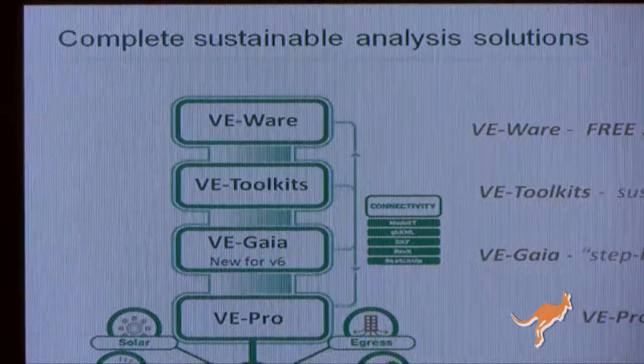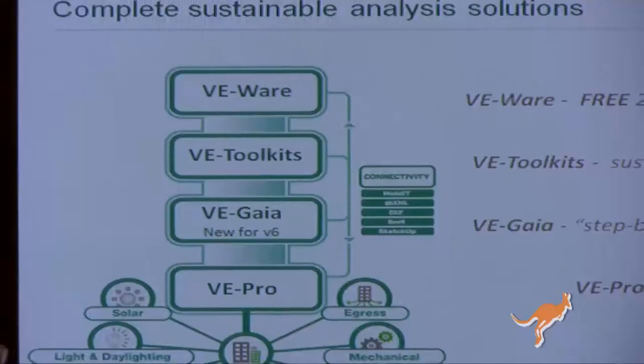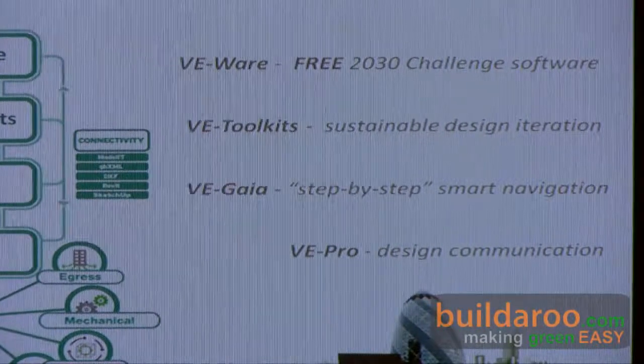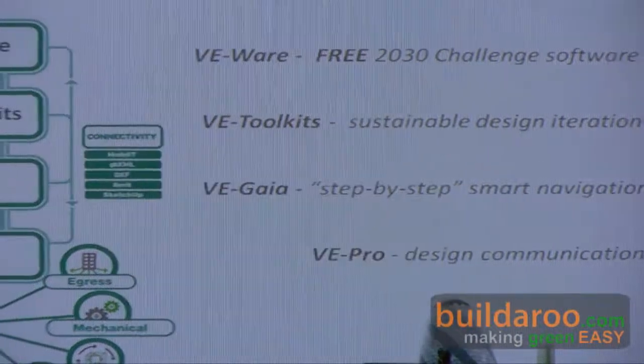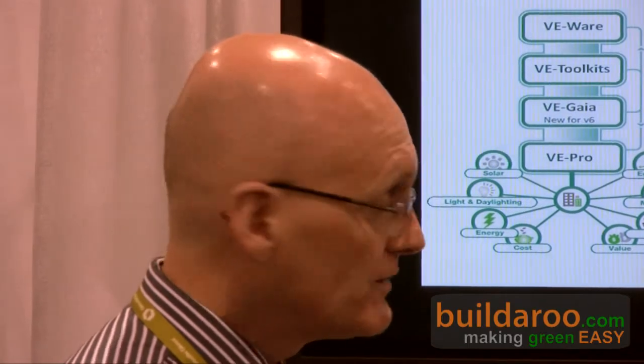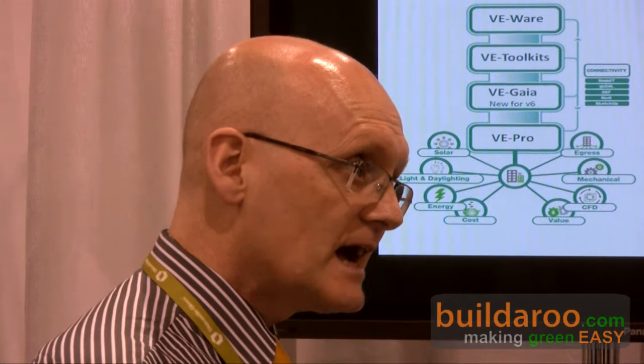The two we've just released in version six and expanded upon are the toolkits, which allow an architect at the very early stage of design to understand a lot about the building in a way they wouldn't normally get. This enables them to make better decisions about sustainable design — get it right at the beginning and there's a far better chance the design will be right at the end. For architects who want greater depth but find VE Pro too complex, we've brought out VE Gaia, which steps them through a workflow so they can access the full power of the virtual environment without having to learn the complexity.